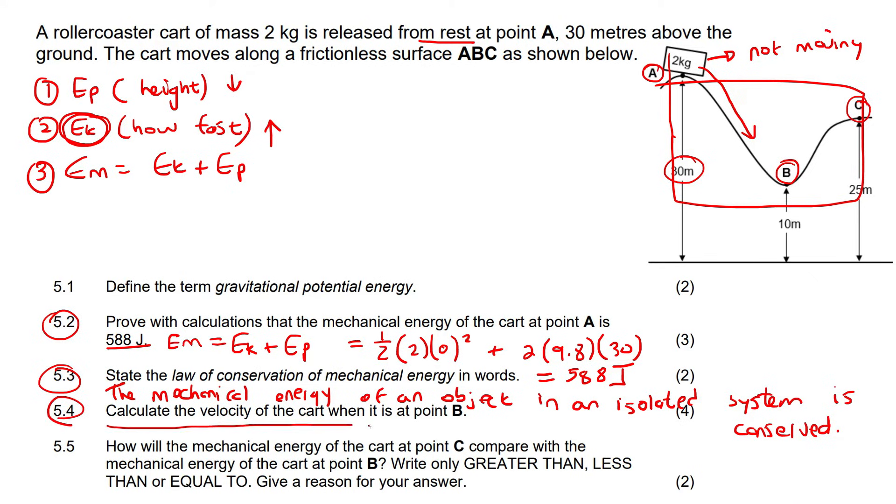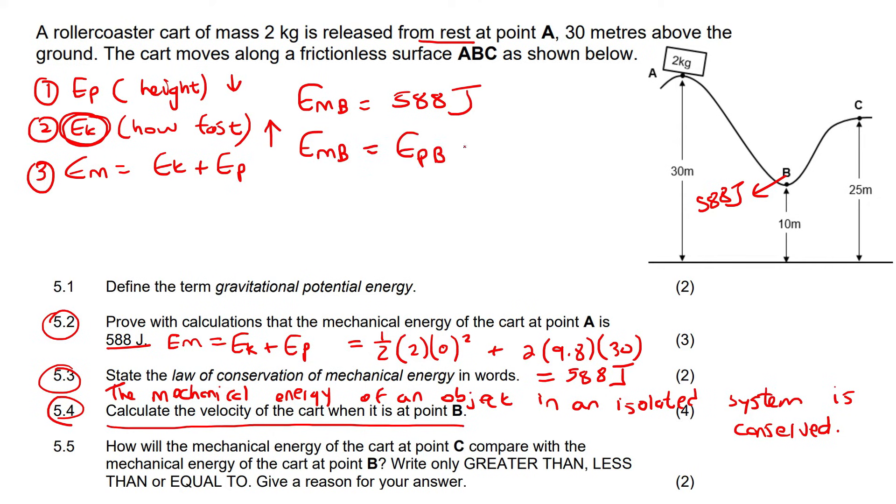So, this question, calculate the velocity at point B. Now, check how easy this is, okay? Have a look at this. What we have said is that the mechanical energy never changes. So, what is the mechanical energy at B? Well, there we go, 588. We know that. So, we can say that the mechanical energy at B is 588. We don't even have to go do a calculation for that, because we know that mechanical energy stays the same everywhere for this object. Now, we know that mechanical energy at B is going to be the potential energy at B plus the kinetic energy at B, right? Because that's what mechanical energy is. So, we can go fill in the formulas now.